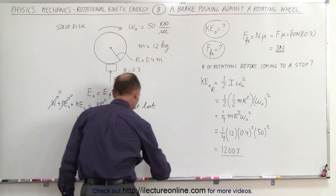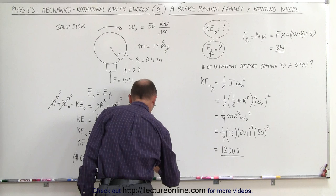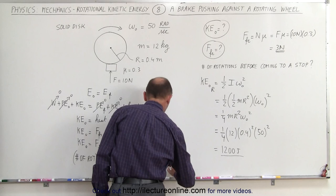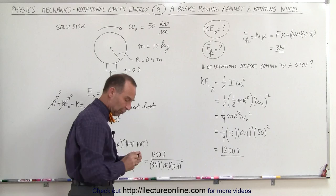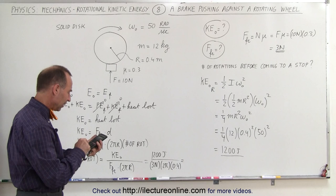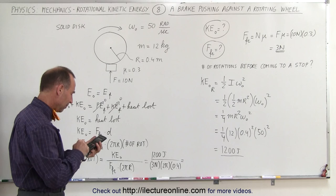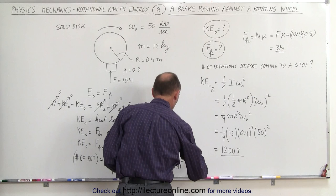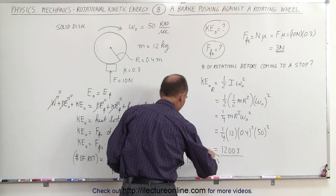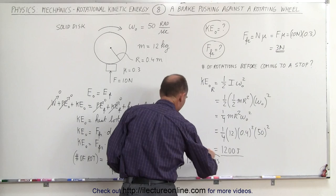Plugging in all the numbers: initial kinetic energy is 1200 joules, friction force is 3 newtons, and the distance is 2 pi times the radius of 0.4 meters. That gives us the number of rotations: 1200 divided by 3, divided by 2 pi, divided by 0.4, which equals approximately 159 rotations before the wheel comes to a complete stop. This is a nice example of how to use rotational kinetic energy and how a brake works on a rotating object.